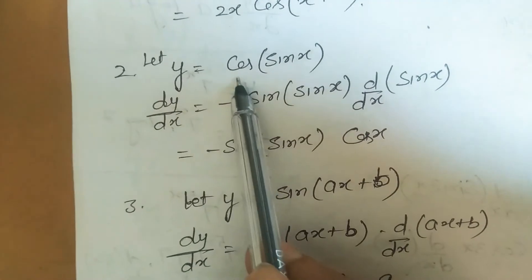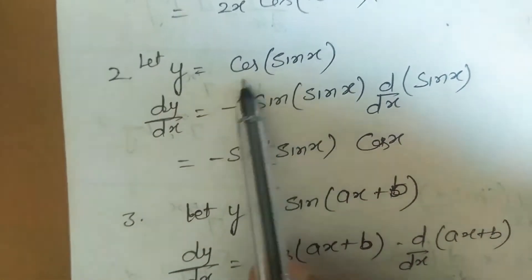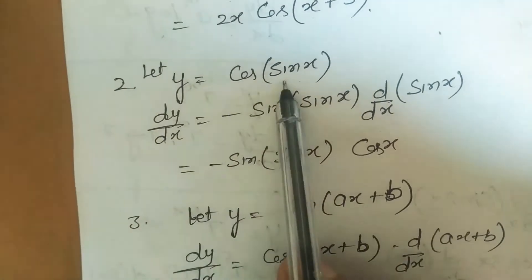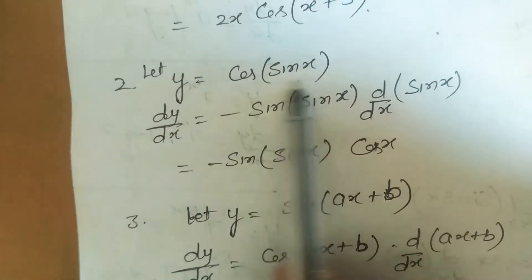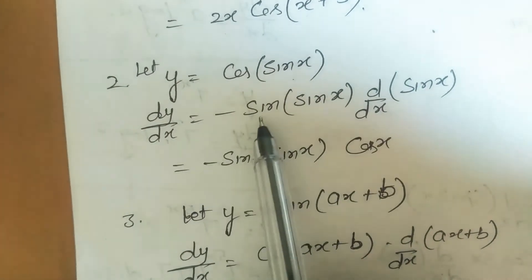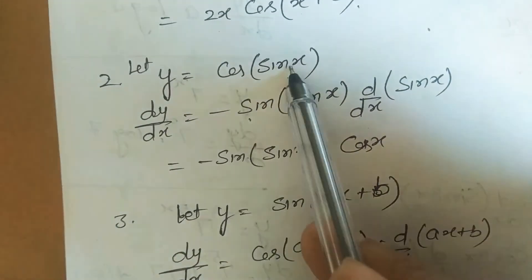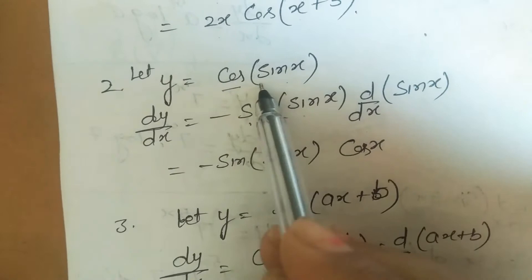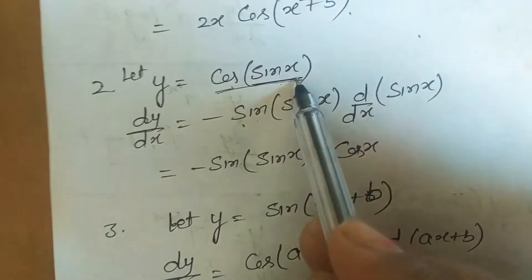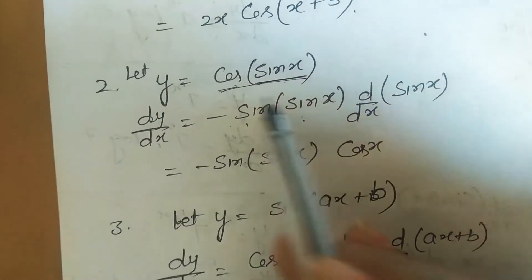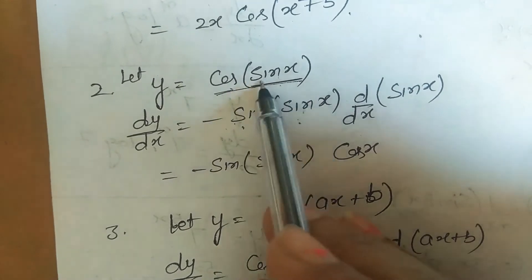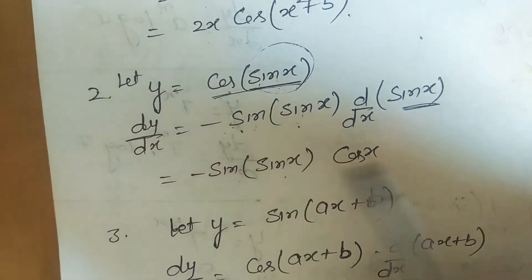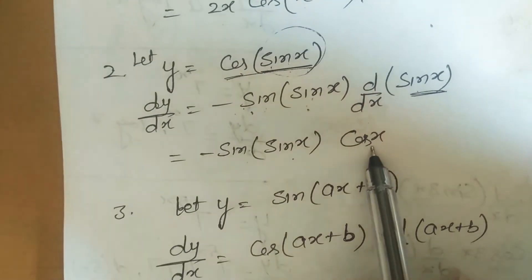Question 2: y = cos(sin x). Derivative of cos is −sin, so: −sin(sin x) · d/dx(sin x) = −sin(sin x) · cos x.